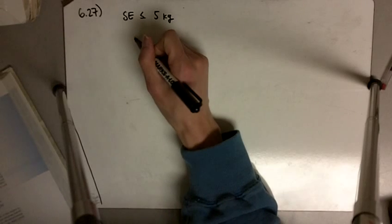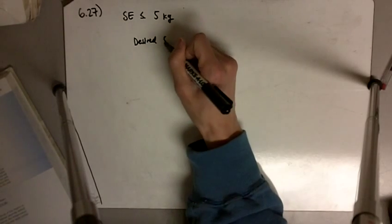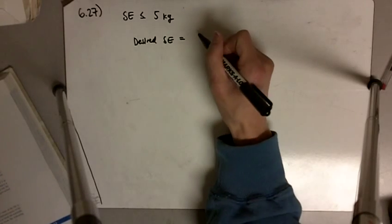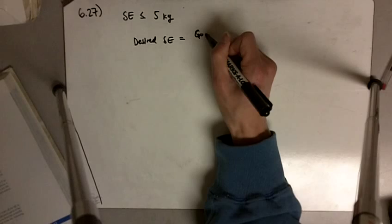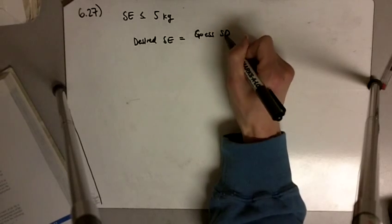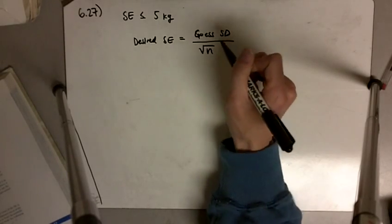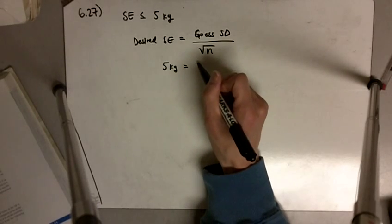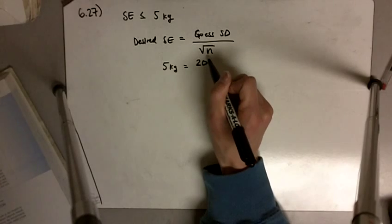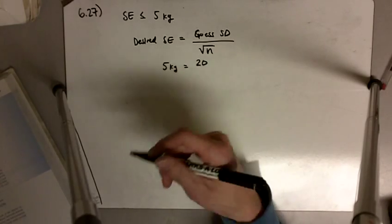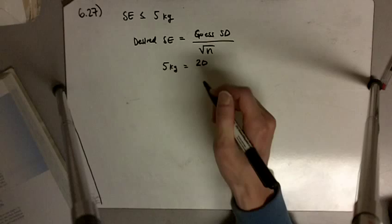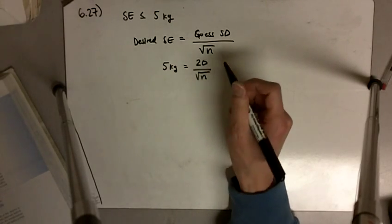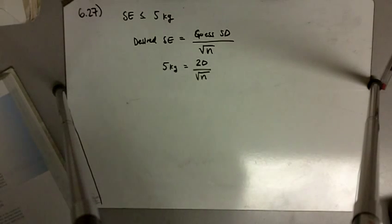So the standard error, the desired standard error, is going to be our guessed standard deviation divided by the square root of n. So what we want is 5 kilograms, and we're guessing our standard deviation to be about 20 kilograms, and so our standard error is going to be 20 divided by the square root of n.